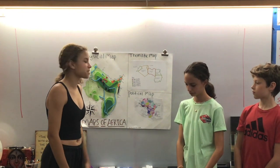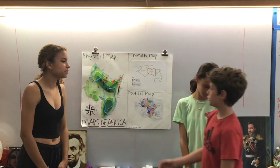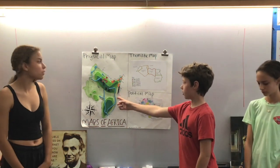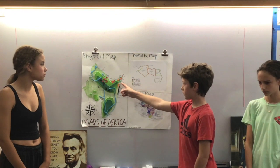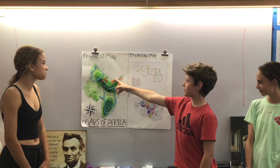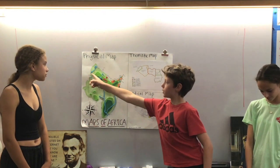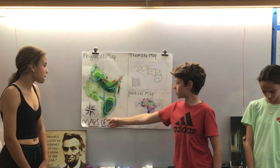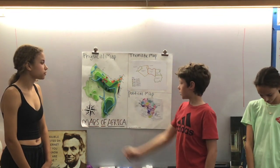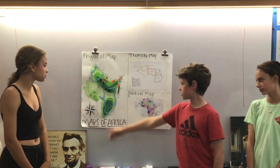This is the political map — it just shows the countries in different colors. This is the physical map. Here we have the coast, ocean, cliff, mountains, deserts, peninsula, oasis, forest, bay, lakes, rivers, deltas, plains, hills, mountain ranges, and lines for longitude.